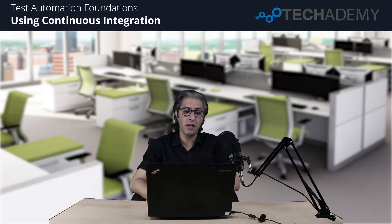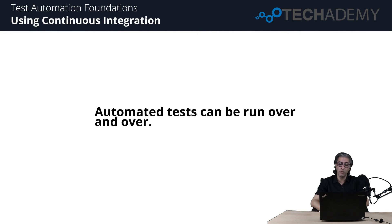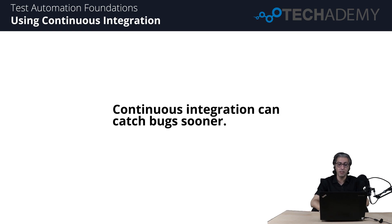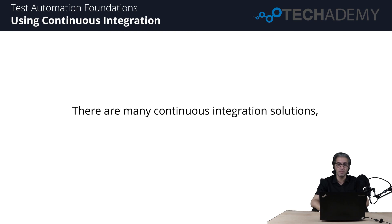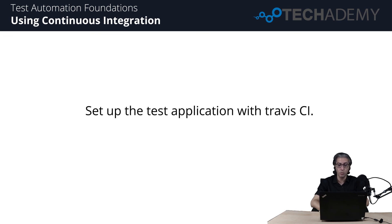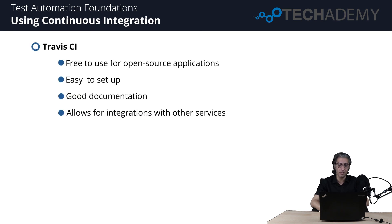Hi everybody and welcome to the session on continuous integration. The advantage of automated tests is that they can run over and over again and provide the same result. Continuous integration is the best way to allow automated tests to run continuously across different platforms and environments. Tests can be triggered by new changes pushed to GitHub, or run on a recurring basis such as every hour or every night. CI will likely catch bugs sooner than engineers running tests locally on an ad hoc basis. We will demonstrate setting up the Stickerfiy application with a CI tool called Travis CI.